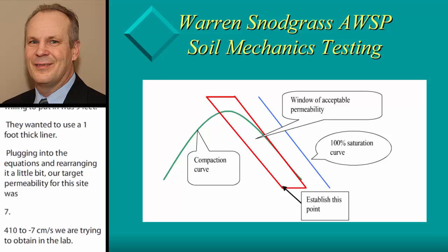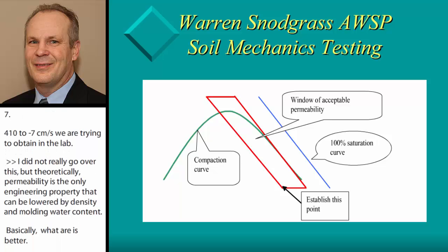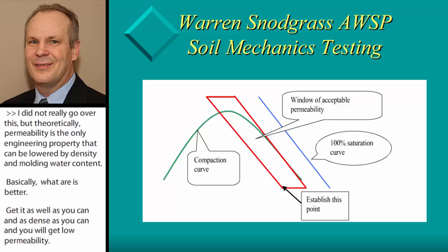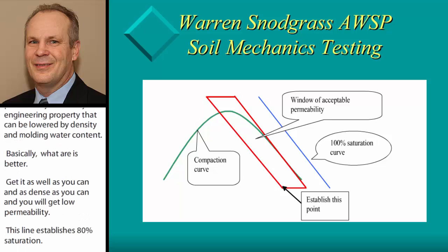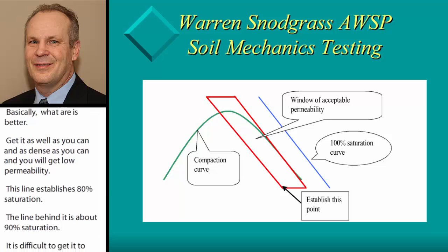Permeability is the only engineering property that can be lowered by both density and molding water content. So basically, wetter is better — you get as wet as you can and as dense as you can and you're going to get low permeability. This line establishes about 80 percent saturation, and this line behind it is about 90 percent saturation. It's difficult to get above 90 percent saturation in the field because it's hard to squeeze the last 10 percent of air out. Your zero air voids line on the right is your 100 percent saturation line.